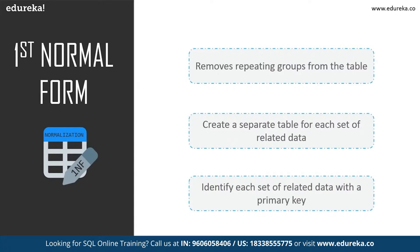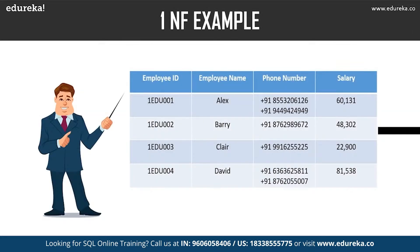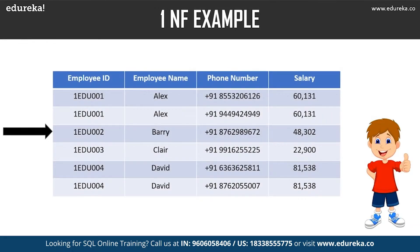The following functions are performed in First Normal Form: it removes repeating groups from the table, creates a separate table for each set of related data, and identifies each set of related data with a primary key. In the employee table, we have Employee ID, Employee Name, Phone Number, and Salary as columns. We can clearly see that the Phone Number column has two values, which violates the First Normal Form. After applying 1NF, each and every row is distinct with no cell having multiple values — the table has achieved atomicity.